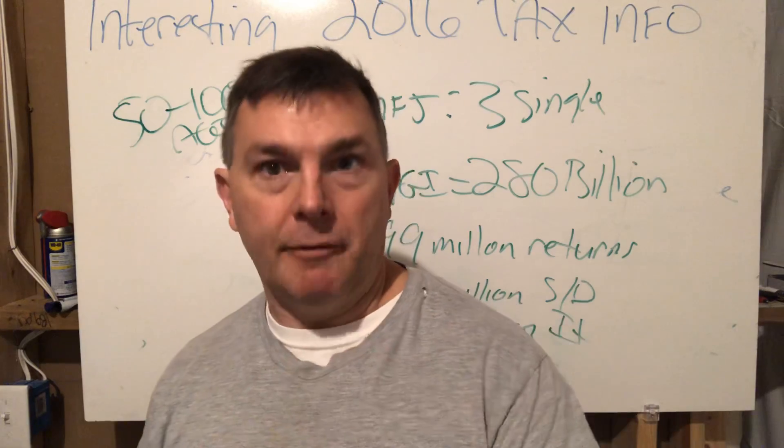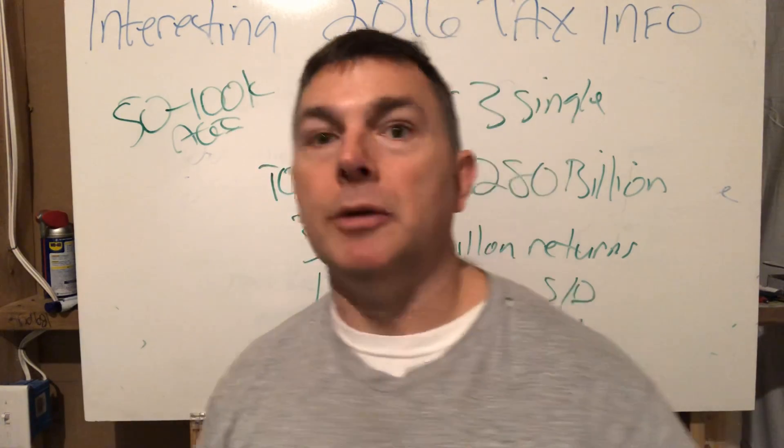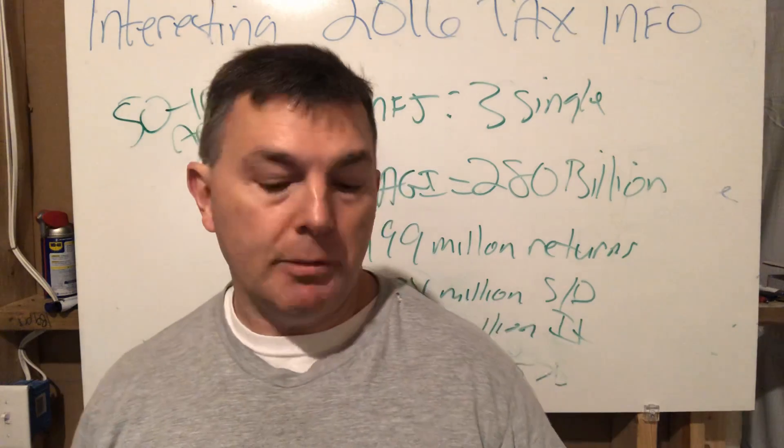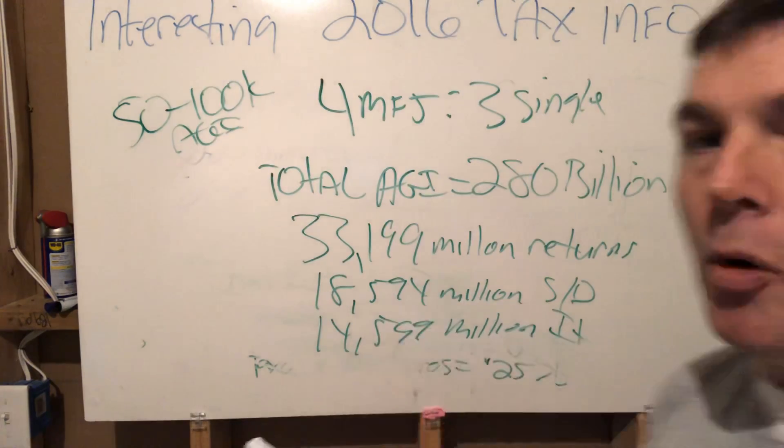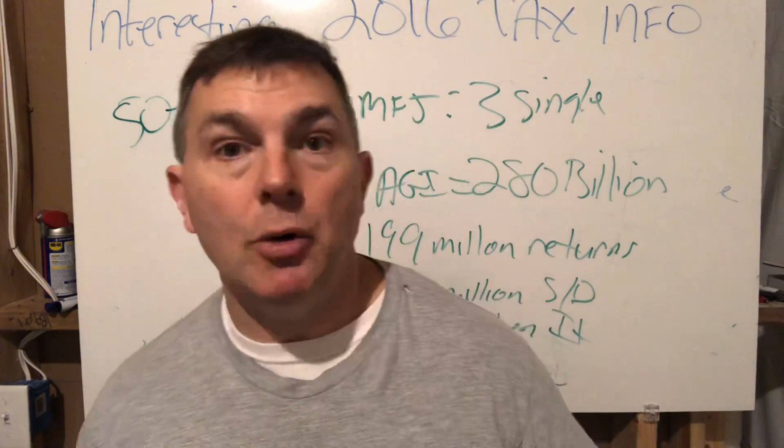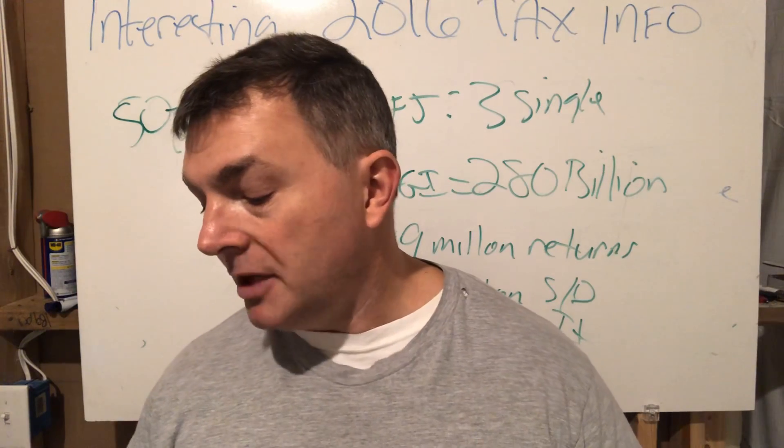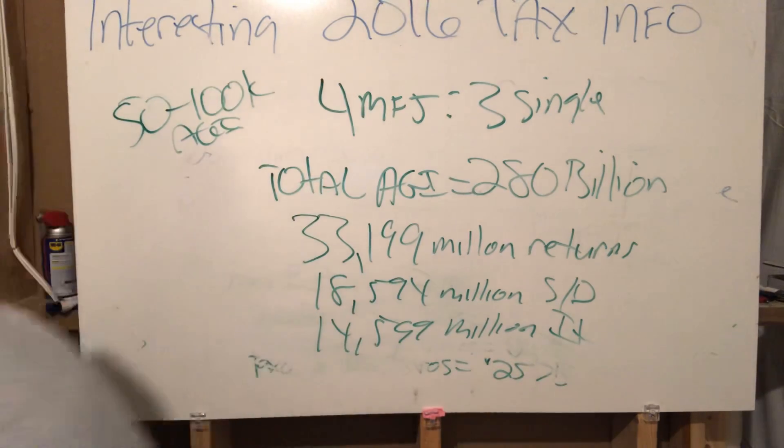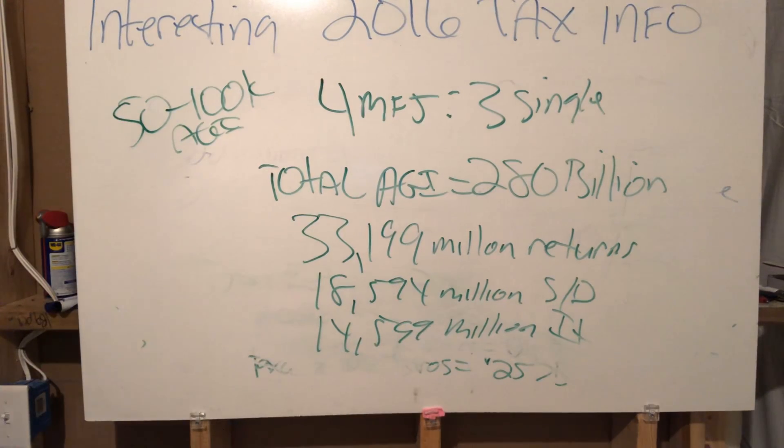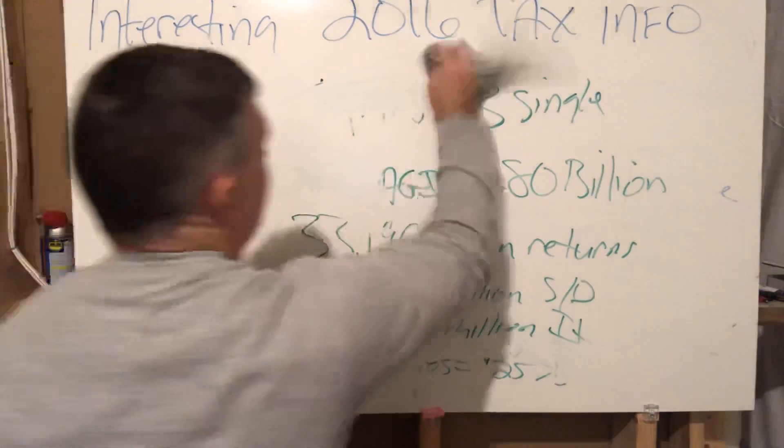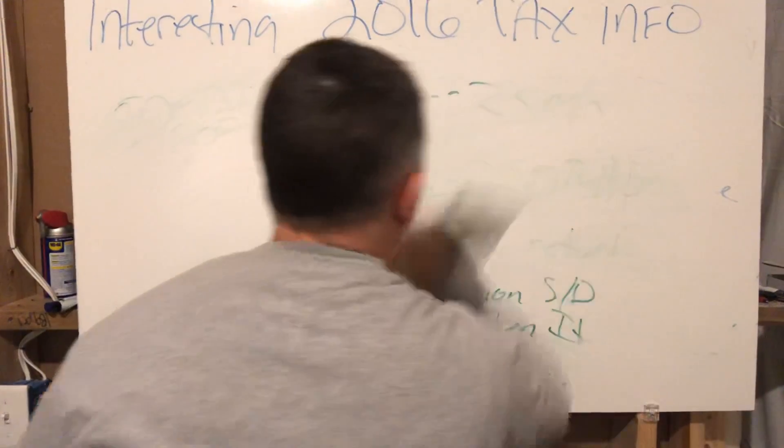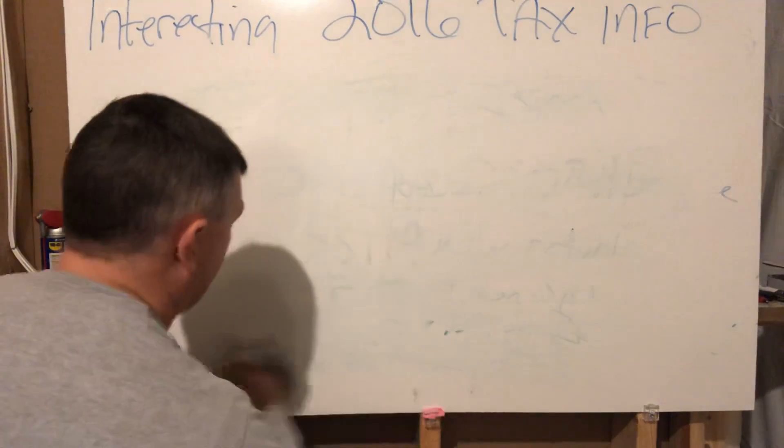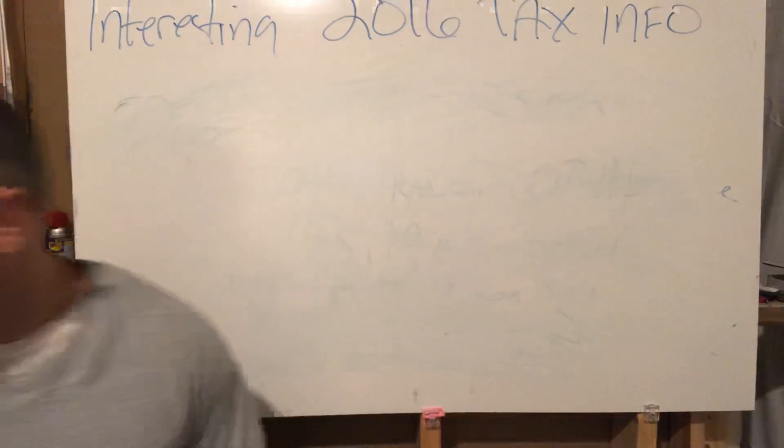Of those 33 million returns, 18.94 filed a standard deduction means they had no itemization and 14.5 had itemization so they took more than the standard deduction allowed. This is where it gets pretty interesting especially as we go forward with the new tax bills.